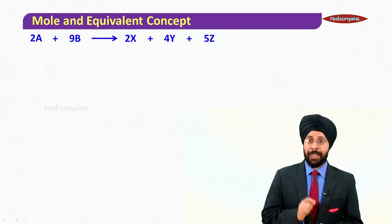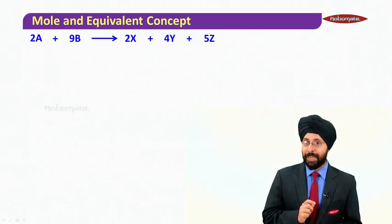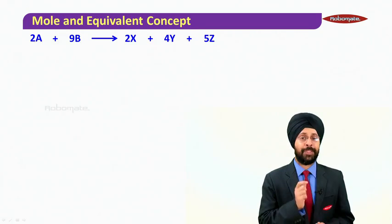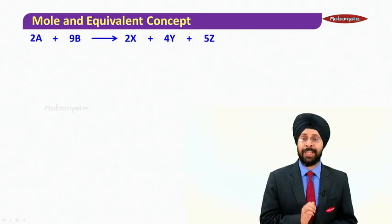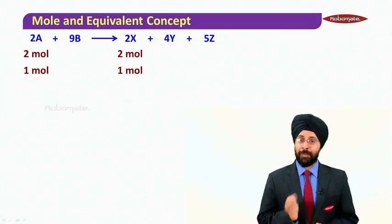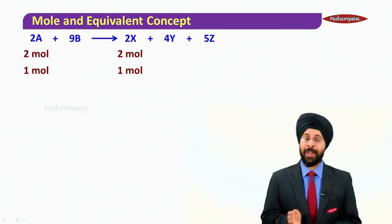So let us see how we do it. We write down the stoichiometry of the reaction: 2A + 9B → 2X + 4Y + 5Z. But the interesting part is 2A and 2X. So we write down 2 mole A is going to produce 2 mole X, so 1 mole A is going to produce 1 mole X.